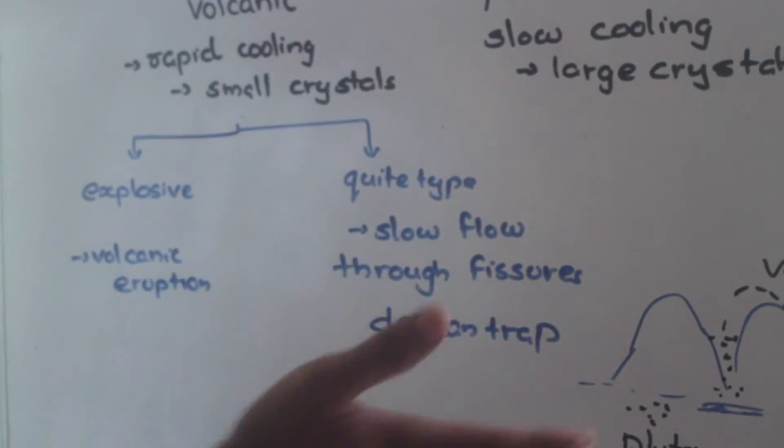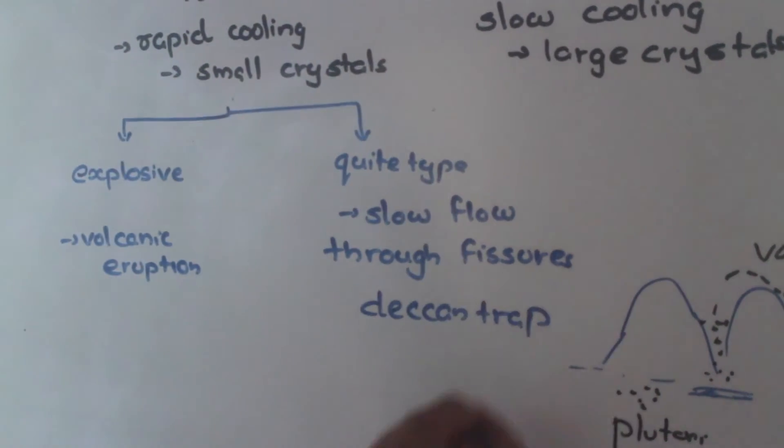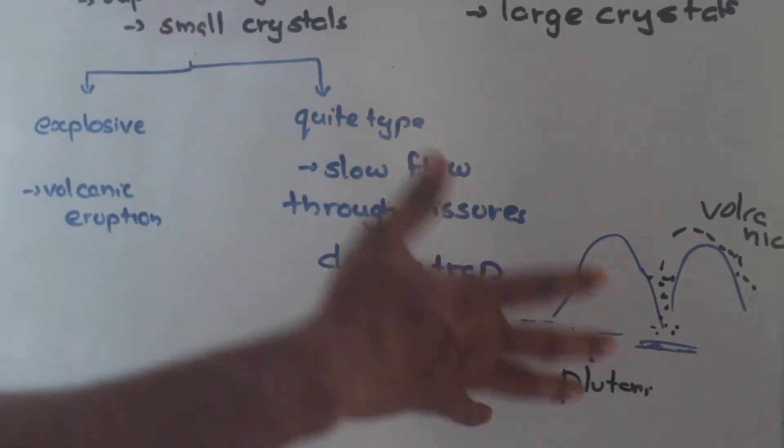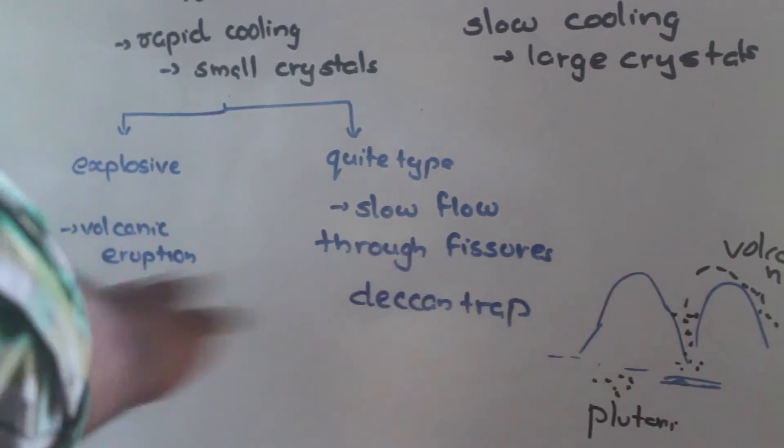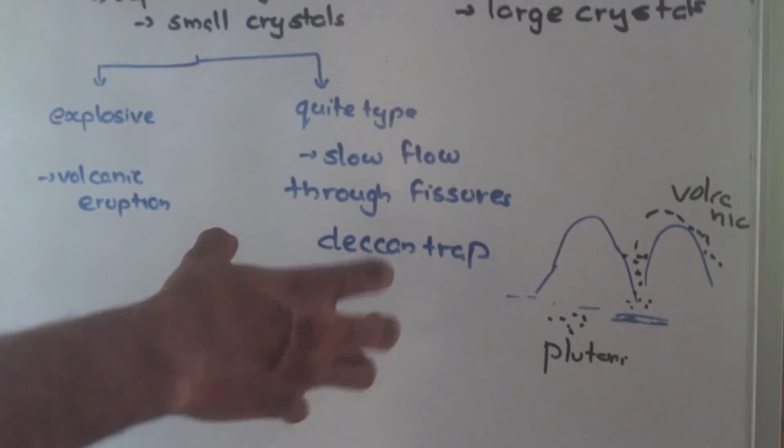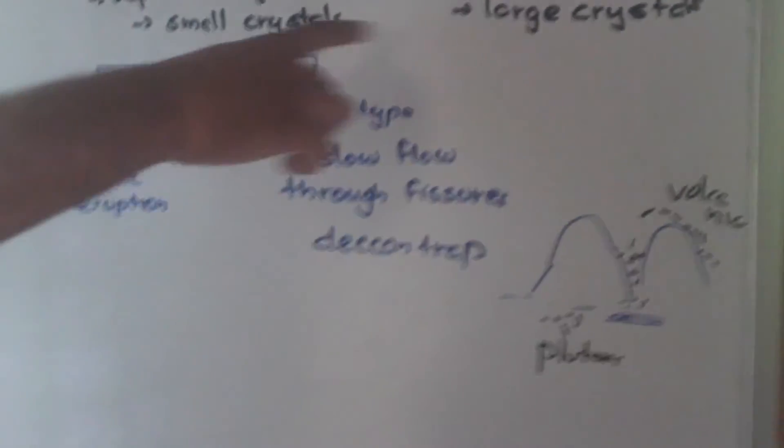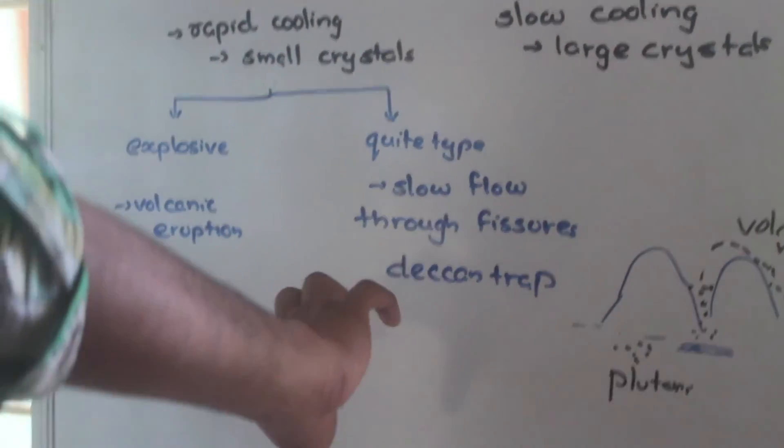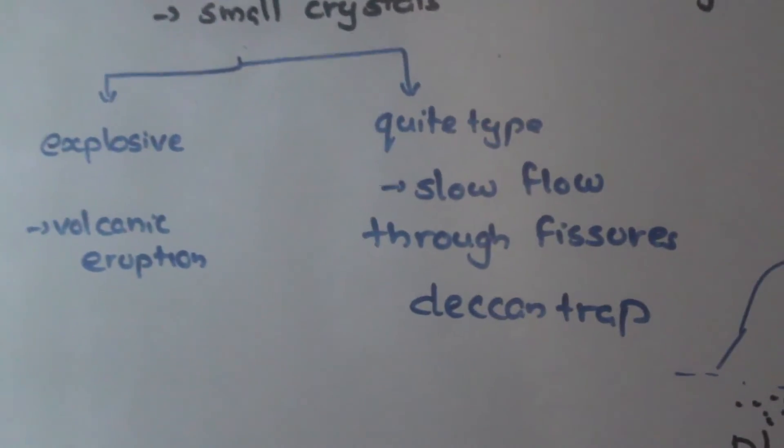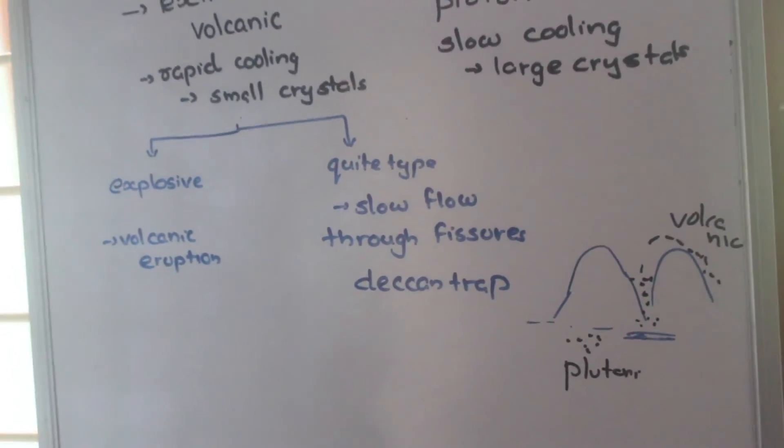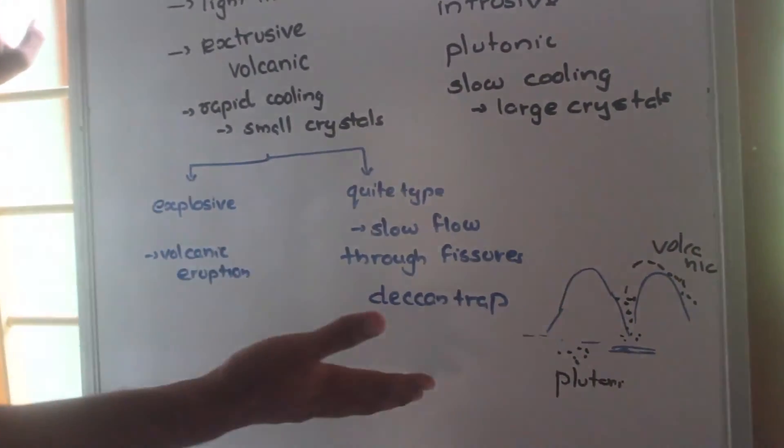Whereas sometimes, on the earth surface, there will be small holes through which the magma will flow out and form layers, giving us plateaus. That rock can be called quiet type. In quiet type, there is no explosion and the magma comes out through fissures or small holes and undergoes solidification. The best example is Deccan trap.